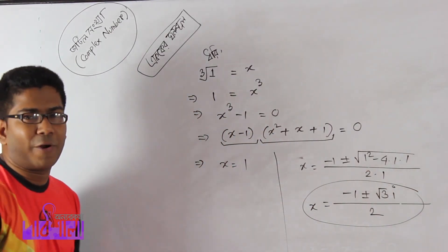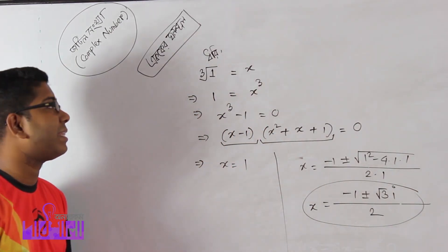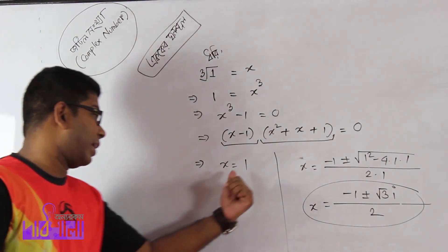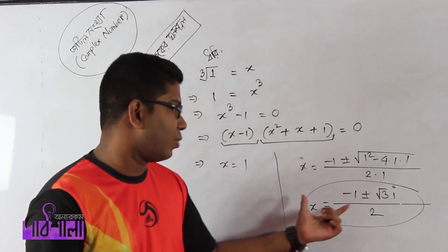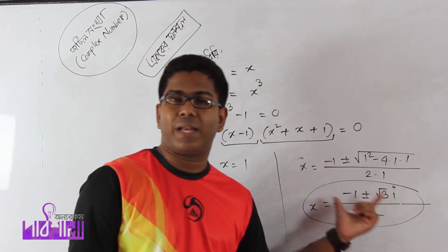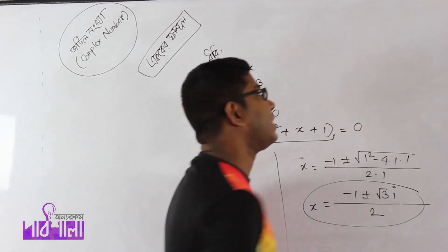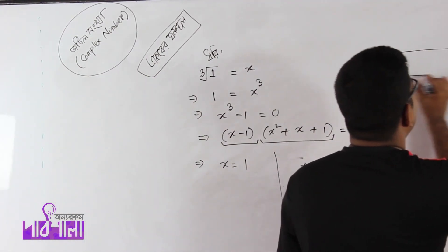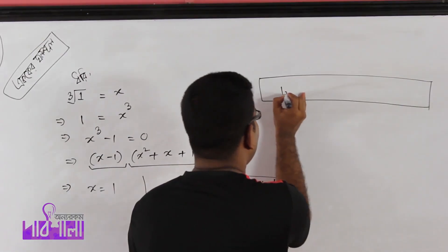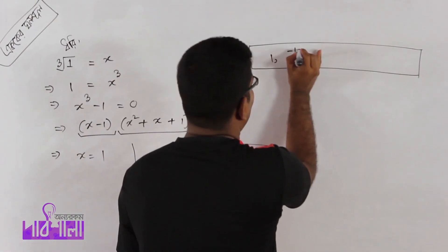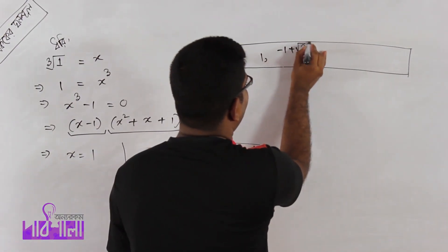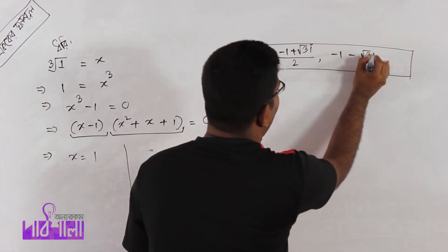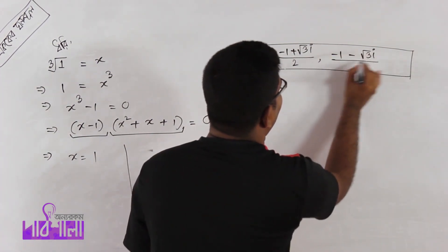Then we have the extra value of 3 — basically it is 3, it is the cubic root. So the extra value of 1 is the first value. We have the extra values: minus 1 plus root 3i divided by 2, and minus 1 minus root 3i divided by 2.